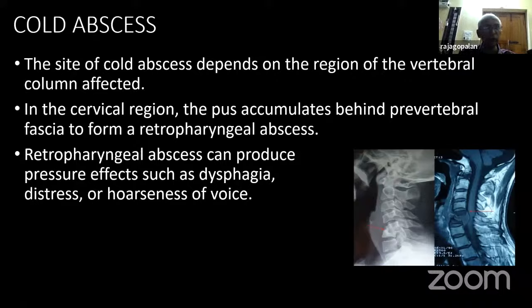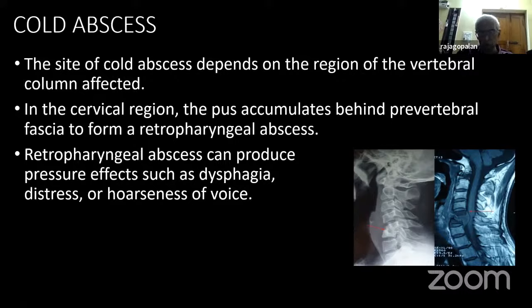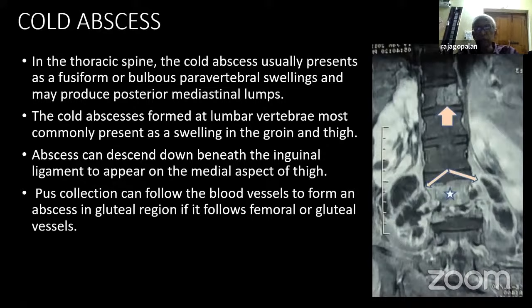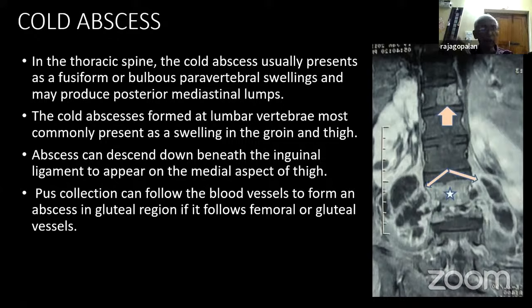A cold abscess depends on whether the cervical, dorsal, or lumbar spine is involved. In the cervical spine, the pus will collect anteriorly and form a retropharyngeal abscess, presenting with dysphagia or hoarseness of voice. In a lateral X-ray view, you can see a widened retropharyngeal space. In the thoracic spine, it may remain as a paravertebral or paraspinal abscess, or track along various openings in the diaphragm, along the big vessels, presenting up to the medial part of the ankle or gluteal region of the thigh. It can also track along the intercostal nerve. Cold abscess can present anywhere.